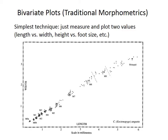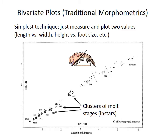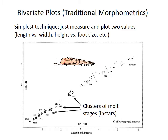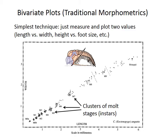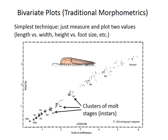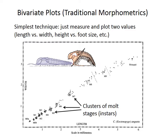The example plotted here belongs to a trilobite species. The individuals group in small clusters because trilobites periodically molt and grow a larger exoskeleton rather than growing continuously. You can see the clusters of molt stages, or instars, on this length versus width plot.